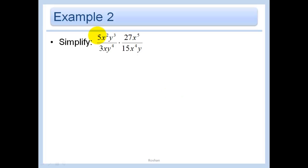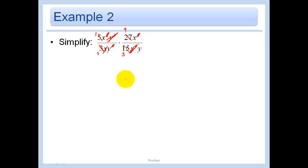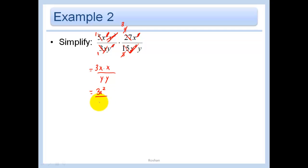When we do this, we can go canceling out tops with bottoms to simplify. Divide the top and bottom by 5 — we get 1 and 3. Divide by 3 — we get 9 and 1. We have X squared here, so we can cross out one of those X's with one of those X's. Cross out 5 of those with 4 of those — X to the fifth divided by X to the fourth leaves just 1 X on top. The Y's — cancel all of these and we have one more left on the bottom. So I'm left with 3X squared over Y squared. That's my final answer.